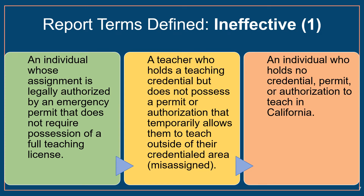The definition of ineffective was approved by the SBE and is included in the California ESSA Consolidated State Plan. A link to these definitions can be found at the end of this presentation. An ineffective teacher is defined as: one, an individual whose assignment is legally authorized by emergency permit that does not require possession of a full teaching license; two, a teacher who holds a teaching credential but does not possess a permit or authorization that temporarily allows them to teach outside of their credentialed area — misassigned; or three, an individual who holds no credential, permit, or authorization to teach in California.